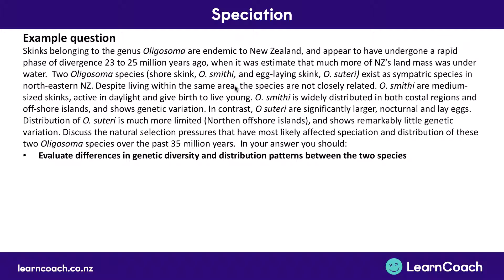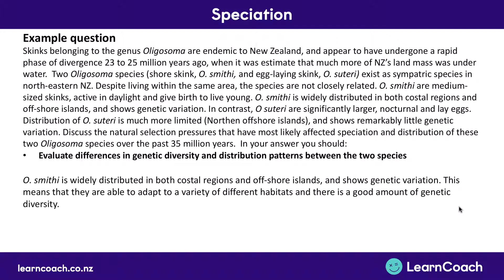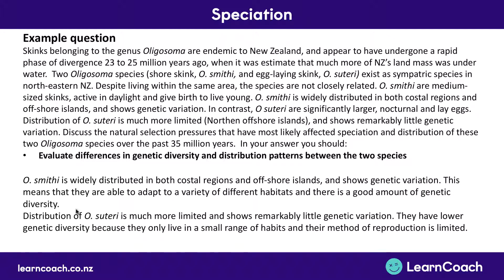The final point is evaluating the differences in genetic diversity and distribution between the two species. O. smithi are widely distributed in both coastal and offshore islands and show genetic variation, meaning they're able to adapt to a wide variety of different habitats due to good genetic diversity within the species. In contrast, O. suteri has a much more limited distribution and shows remarkably little genetic variation. Because they don't have much genetic diversity, it's not as easy for them to adapt to different environments - therefore they only live in a small range of habitats and their method of reproduction is limited because they can't adapt so easily. This is how you'd answer a question on speciation.